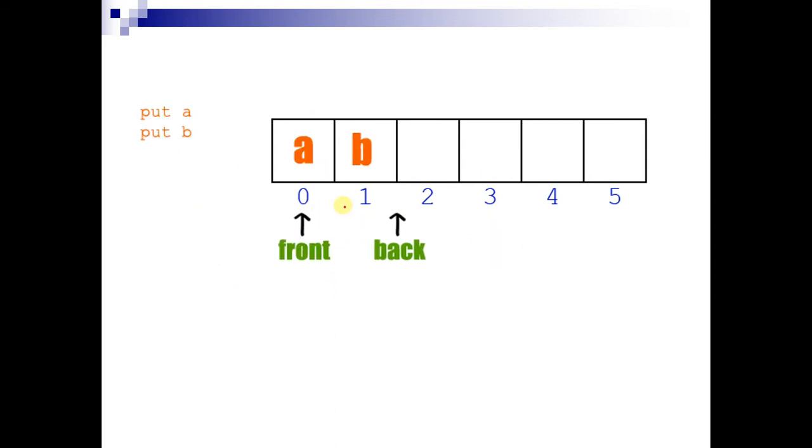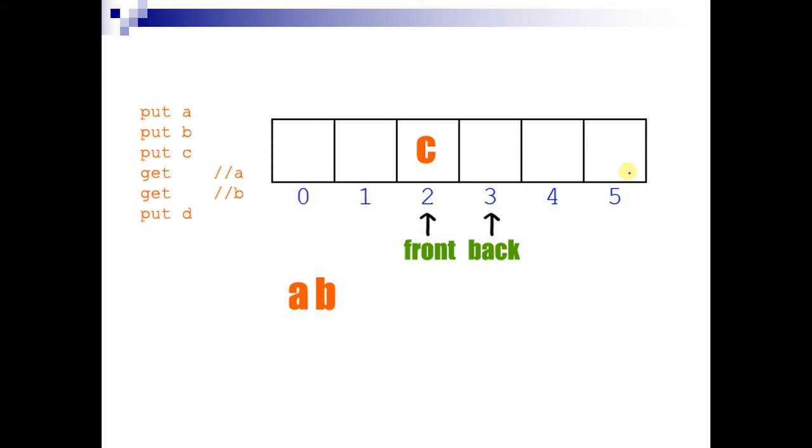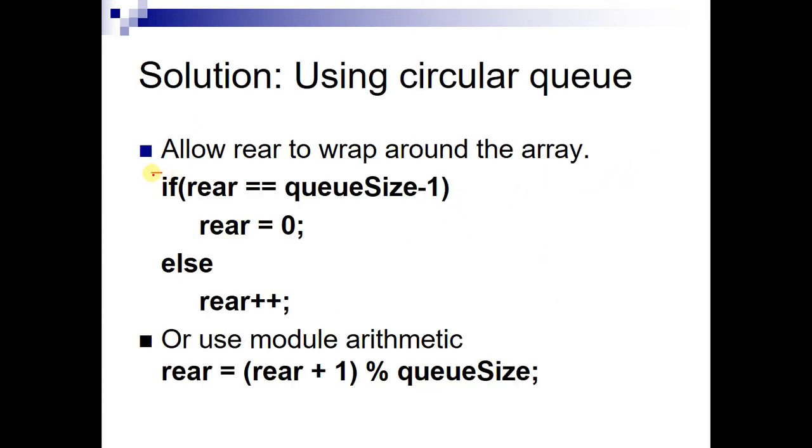Now how to move the back pointer to the start from the end of the array? We can use this if condition. When the rear pointer reaches at the end of the array we will make it zero, otherwise we will keep it incrementing. And these four lines of code can be summed up in this one line of code.